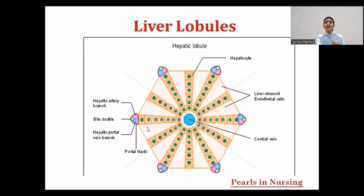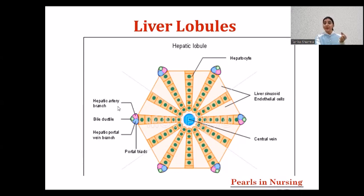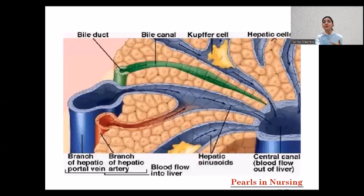The lobule also has sinusoids. At each corner of the hexagonal structure, there is a portal triad — a combination of three things. The portal triad consists of: a branch of the hepatic artery, a branch of the portal vein, and a bile duct. Every corner of the liver lobule has this portal triad, and all of these connect toward the central vein through the sinusoids.